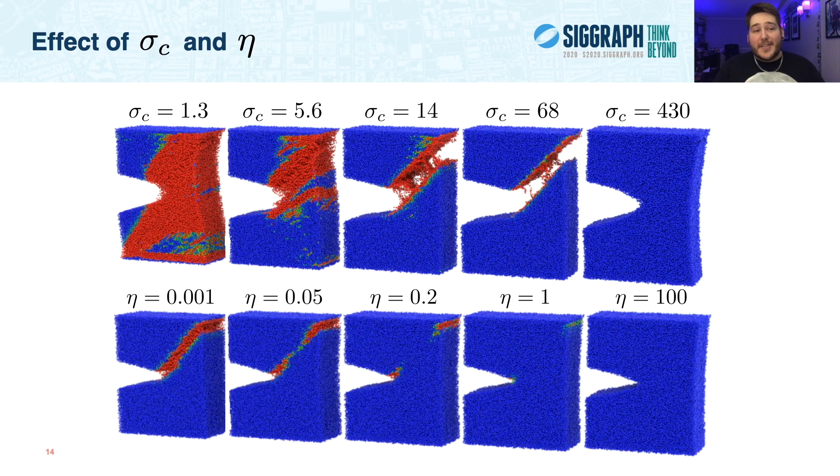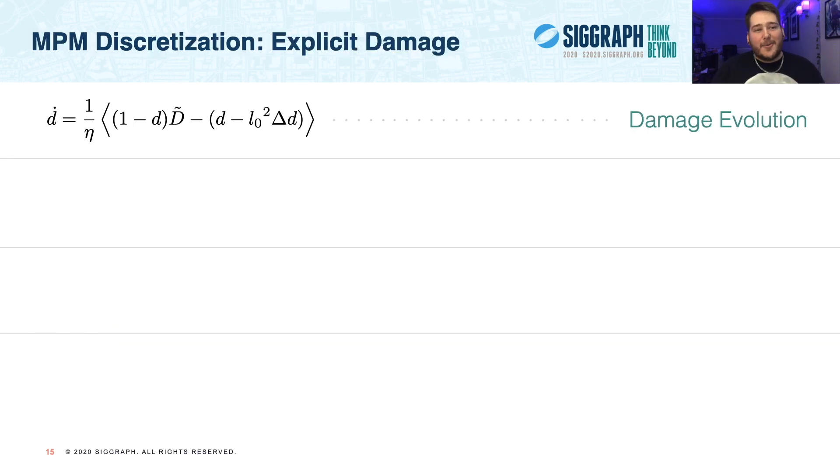Now let's take a brief break from equations to give some intuition behind the material effects attainable through tuning our damage parameters. In the top row, we see that increasing the critical stress, sigma c, increases the material's resistance to fracturing, and in the bottom row, we show the effect of increasing eta, which dramatically slows the crack. And now back to equations.